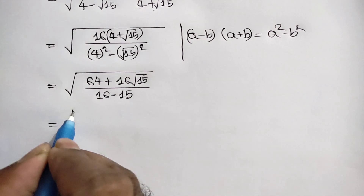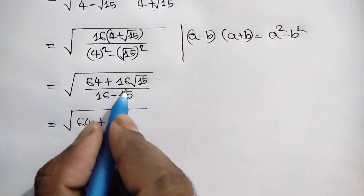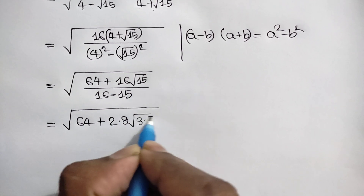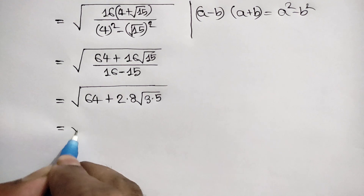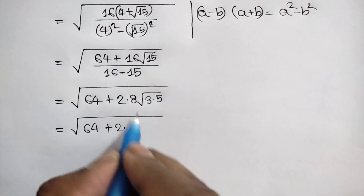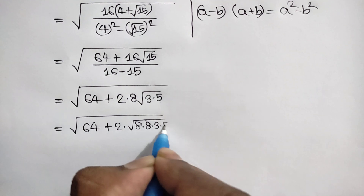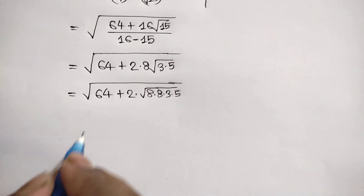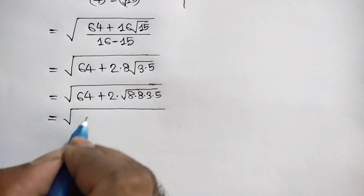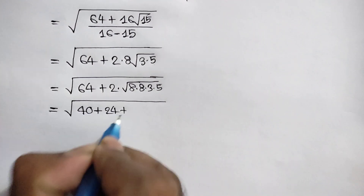So the expression equals square root of (64 plus 16 times square root of 15). Now 16 can be written as 2 times 8, and square root of 15 can be written as square root of 3 times 5. So we get square root of (64 plus 2 times 8 times square root of 15).